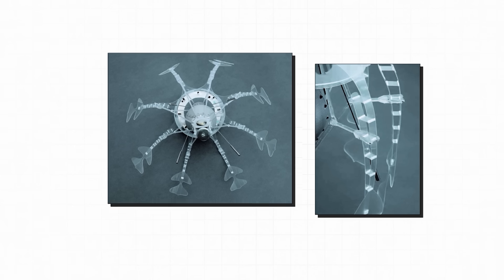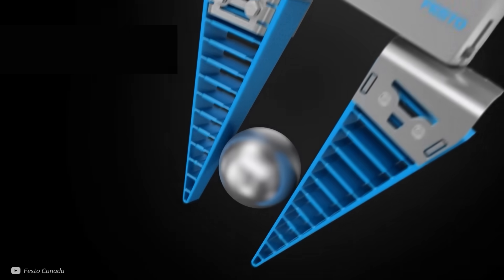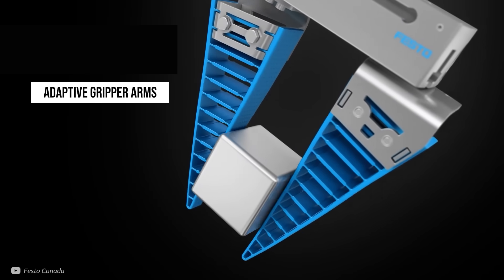Before moving onto the next propulsion system, I do want to mention that the material used to make these tentacles has also found another use. The tentacles are made from Festo's fin ray technology that is inspired by fish scales, and is now being used for adaptive gripper arms in advanced robotics.